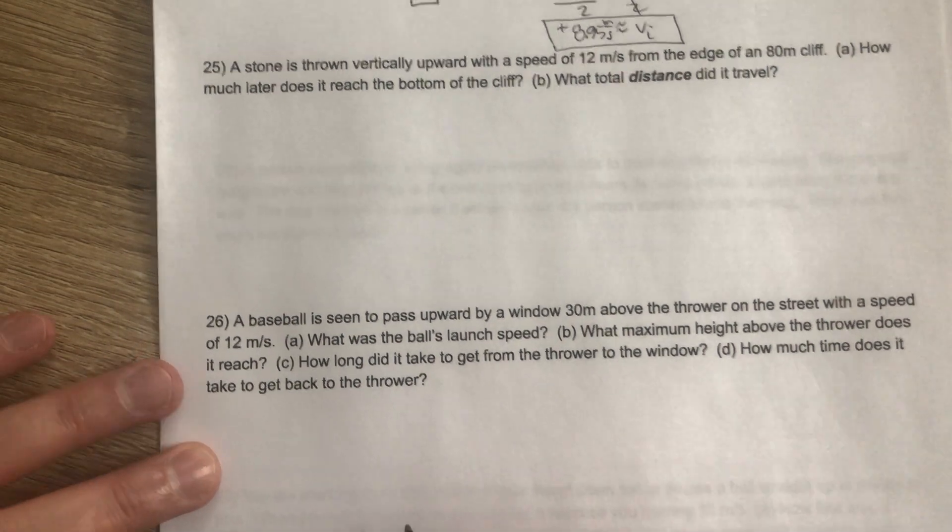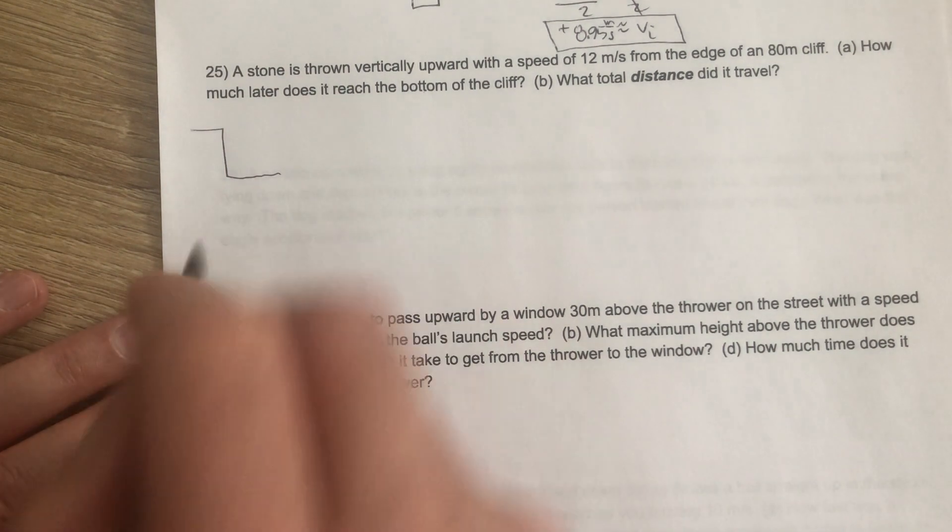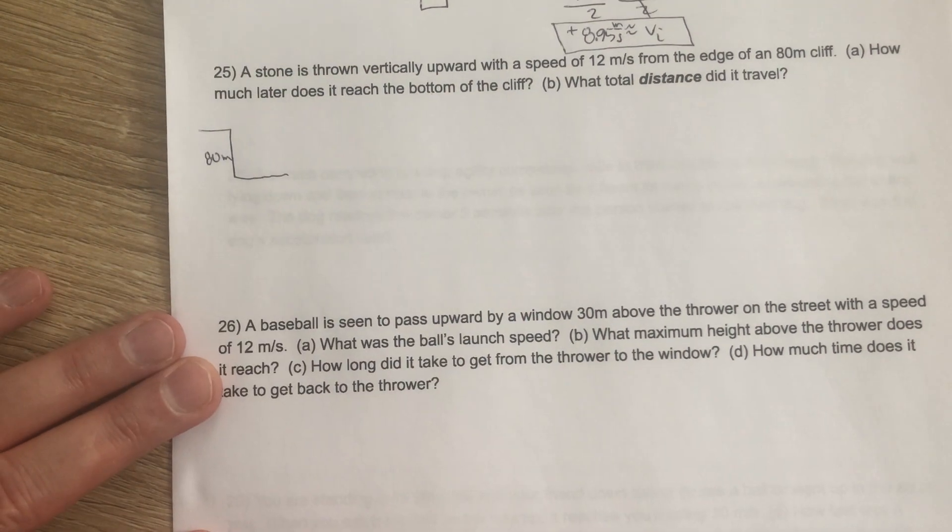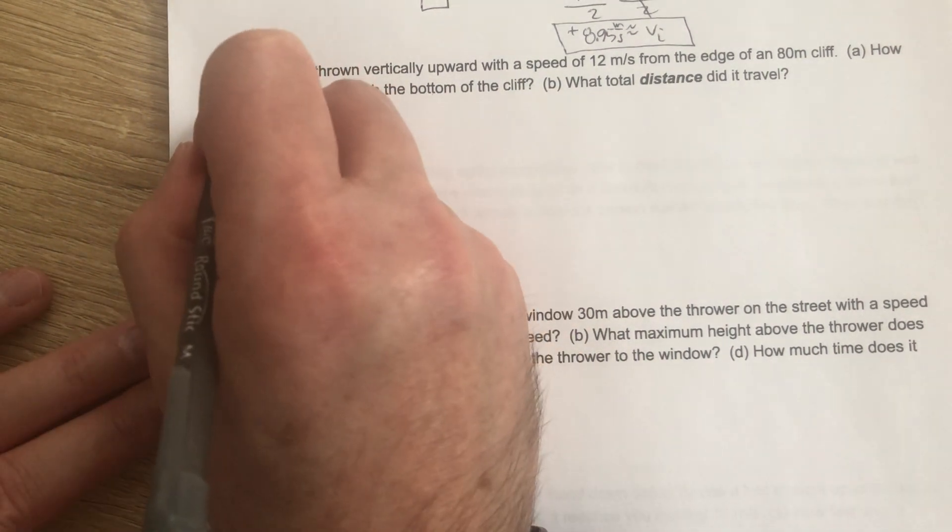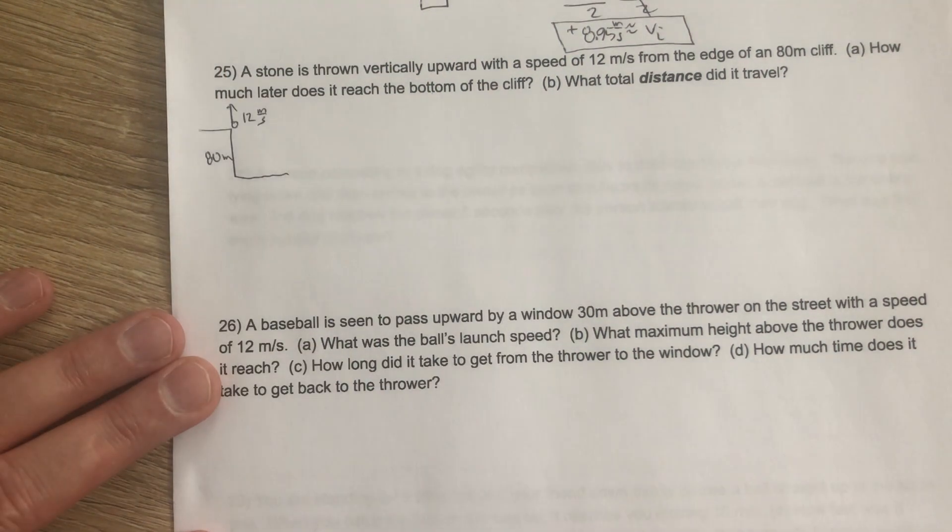I'm just going to sketch this scenario here. The cliff is 80 meters high, and a stone is thrown vertically upward at 12 meters per second. The two things we're looking for here, how much later does it reach the bottom of the cliff? You can do that a couple different ways. We can analyze up to the peak to get that time, and then analyze down from the peak, get that time, and add them together. Or if you have the appropriate amount of information, which we do, you can analyze it more efficiently for the whole trip.